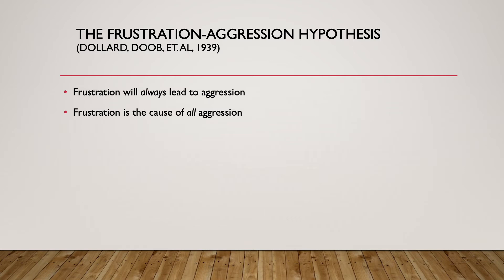And with older people, studies on college students showed that if students had to wait around for a psychology experiment to begin because somebody was late, when that person finally arrived, the people gave stronger shocks in the experiment than they did when the experiment got started on time. So the original studies tended to be fairly supportive of this idea that frustration leads to aggression.